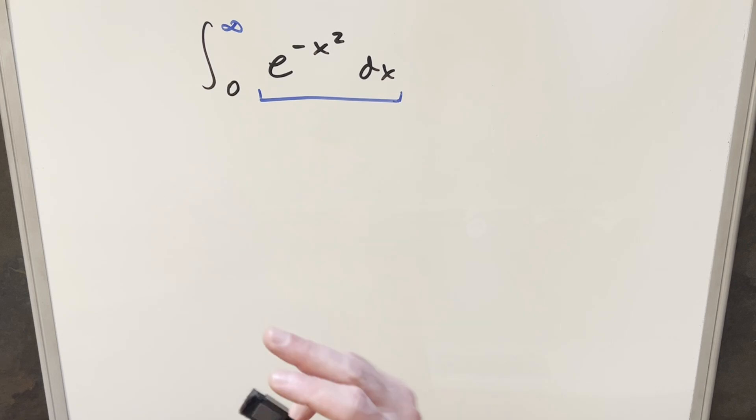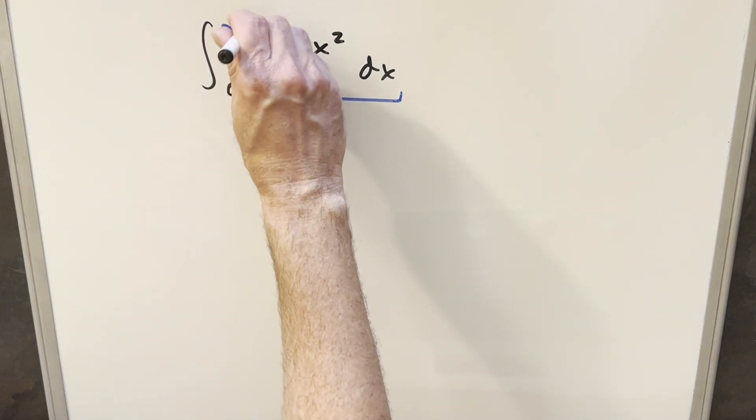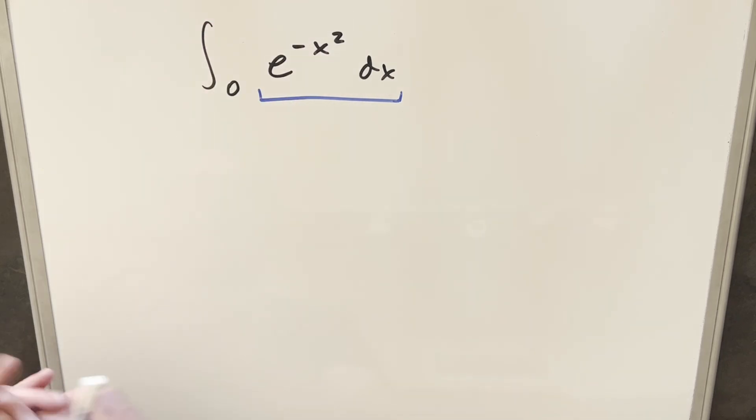If this were the case, we just have a known value for this, this would be square root of pi over 2. We'd be done in two seconds, but the problem is not to infinity. We're going to 3, and that's really where the issue is on this.